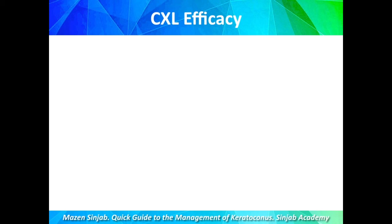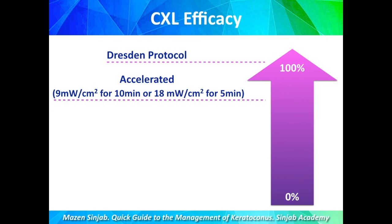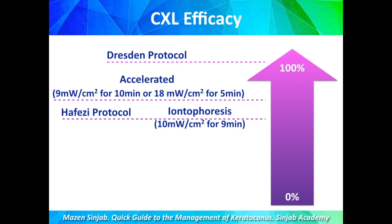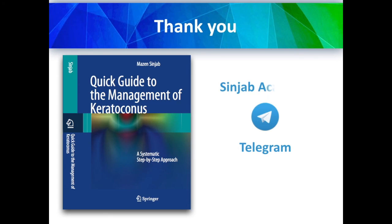To summarize efficacy, taking the Dresden protocol as a 100% reference: next comes the accelerated protocol with the two evidence-based energies (9 mW and 18 mW), followed by the Hafizi protocol and iontophoresis, then other epi-on techniques, and finally accelerated pulsed high-energy crosslinking. There is no place for the prophylactic protocol in this classification. Thank you very much — please join us on Sinjab Academy on Telegram.